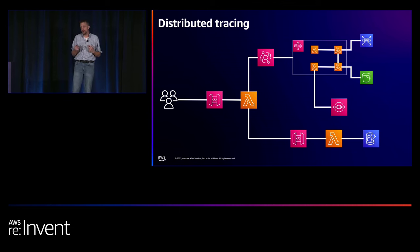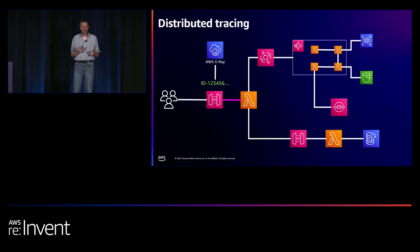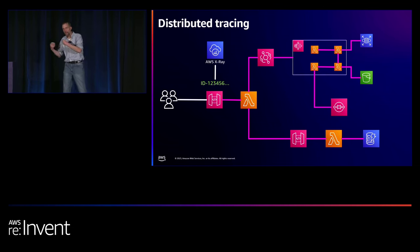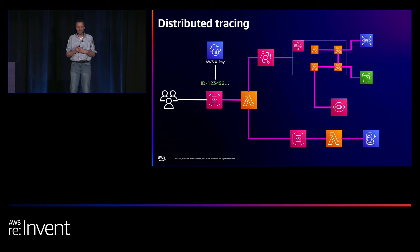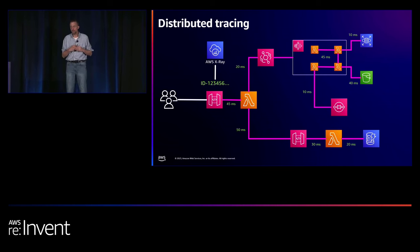Wouldn't it be convenient to track a single user's request throughout your entire system? That's where tracing comes in. In AWS, X-Ray is the service used for distributed tracing. When a user makes a request — for instance, calling an API Gateway — a trace ID is generated. That request ID is passed on to downstream services, which in turn pass it on further, and all along the way they're reporting data to the X-Ray service so all activity within your application can be correlated.